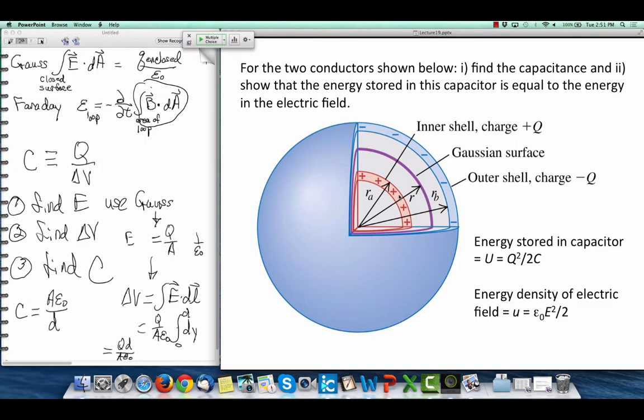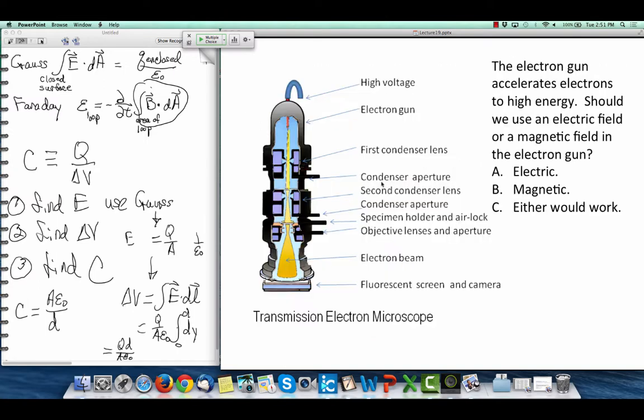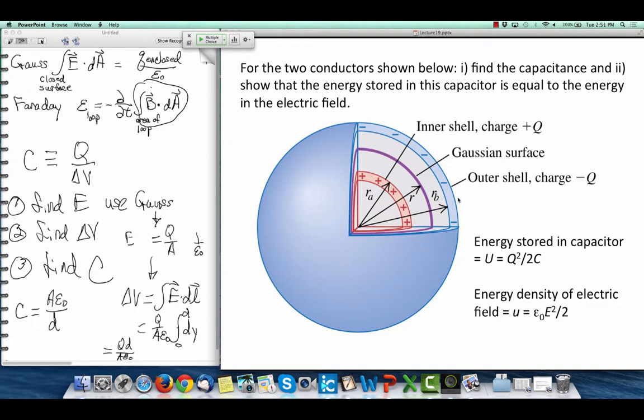The inner sphere has a radius rA, out to the outside part of it. The outer sphere has a radius r sub b.